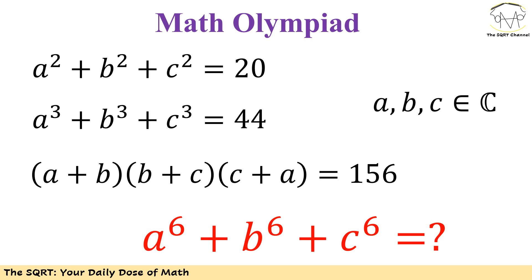Hello everyone, welcome to the SQRT channel. In this video we are going to talk about a really challenging problem. We have a squared plus b squared plus c squared equals 20, and a cubed plus b cubed plus c cubed equals 44. We know that a, b and c are complex numbers and that (a plus b) times (b plus c) times (c plus a) equals 156. What we need to find is a to the power of 6 plus b to the power of 6 plus c to the power of 6.